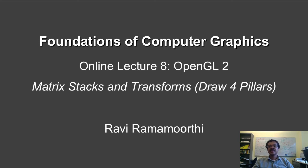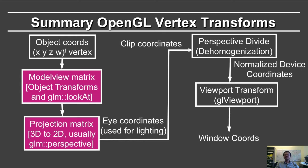We're now going to discuss basic OpenGL matrix stacks and transforms. Let me first summarize the OpenGL vertex transformations. Recall that you start with the object in object coordinates, and here you have the x, y, z, w coordinates in homogeneous coordinates.